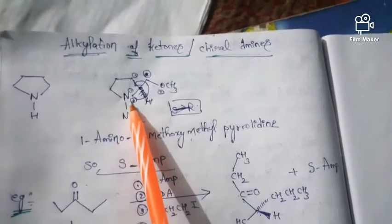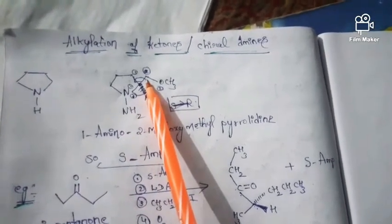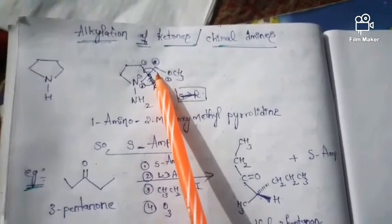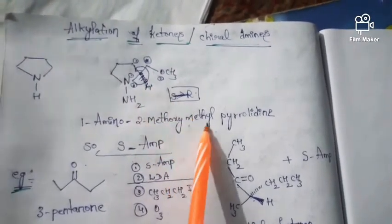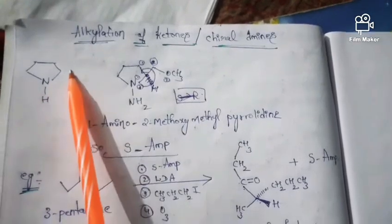Now let us try to name it. First of all, we have to give numbering: 1, 2, 3. So it is 1-amino. Here we have an OCH₃ group, that means methoxy. So: 1-amino, 2-methoxy. Here we have a CH₂ group — we call CH₂ as methylene. So while writing, we write: 2-methoxymethyl-pyrrolidine.